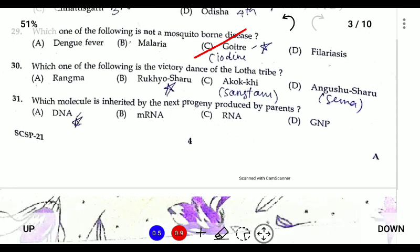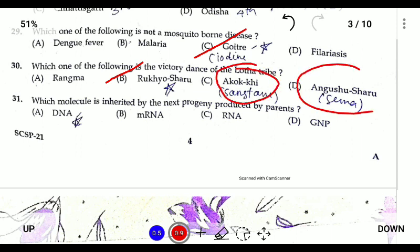Question thirty: which of the following is the victory dance of the Zeliang tribe? The answer is Roko Shama. Nkukino is the dance of the Sumi Nagas, and Ngushusharo is the dance of the Angami Nagas.